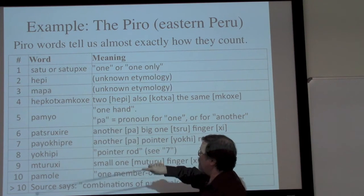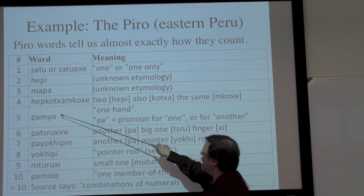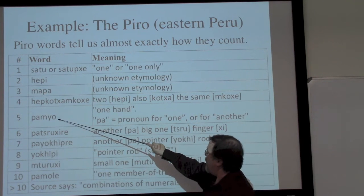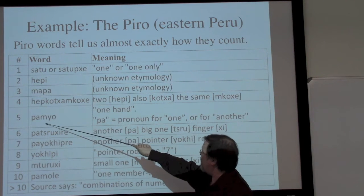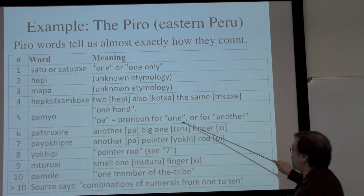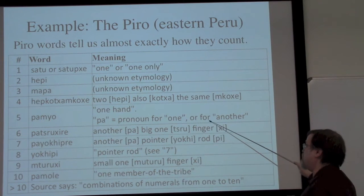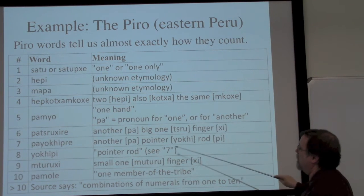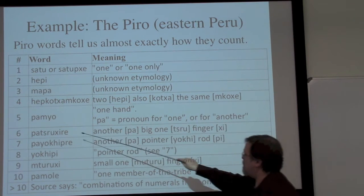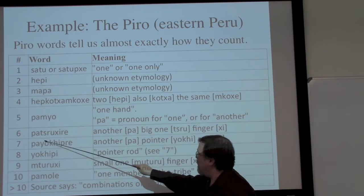Once we get up to four, 'hepi' refers back to two, and 'koca' is some form of 'also.' So four is essentially 'two also the same' — two and another two, with an addition hiding inside. For five, 'pa-myo': 'pa' is a pronoun meaning one or another, and 'myo' translates as 'one hand.' So five is 'one hand.'